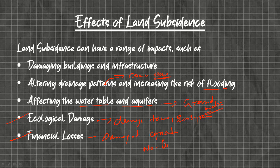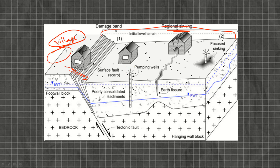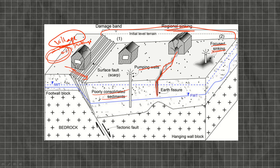As you can see in this picture, there are different features like a surface fault, a debris fan which is a damage fan, and regional sinking. When a whole area, village, or particular kilometers of area is sinking, that is called regional sinking. Within regional sinking, there will be a particular spot where sinking starts, called focused sinking. You can also find surface features when the land is sinking. These are all due to pumping wells and fully consolidated sediments.